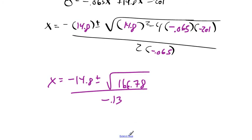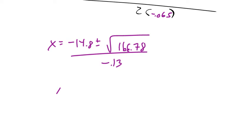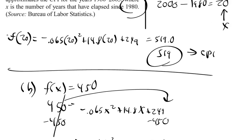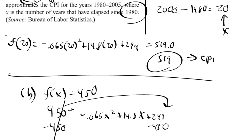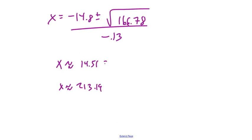Obviously we can't simplify the radical, so we can go straight to our two answers. The first answer is approximately 14.51, and the other answer is approximately 213.19. In part B it said to round down. So 14.51 rounds down to 14, and 213.19 rounds down to 213.